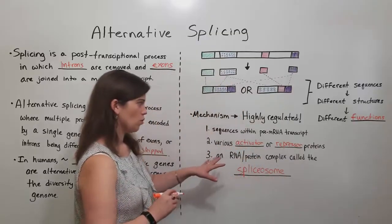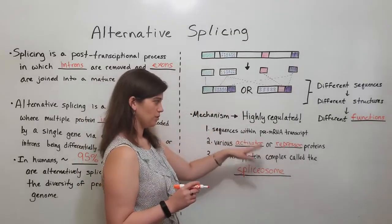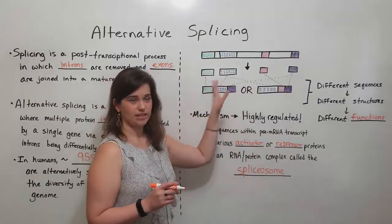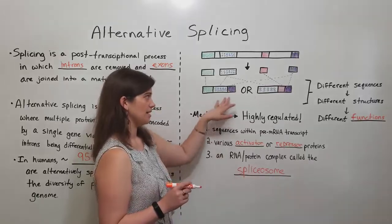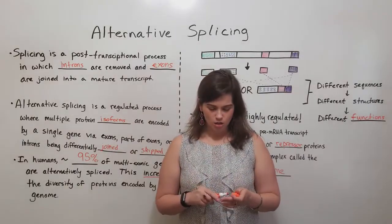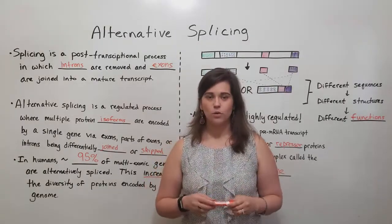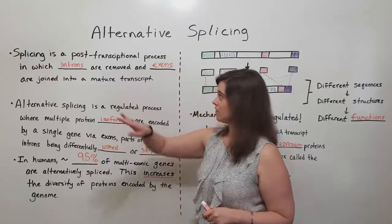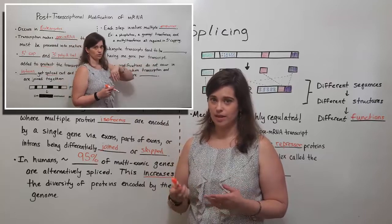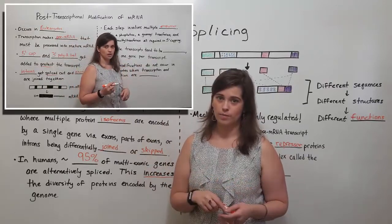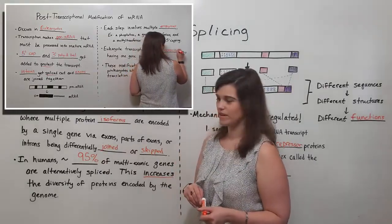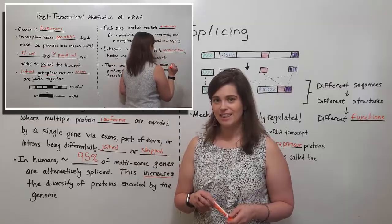The spliceosome works together with the activator proteins, which activate it, and repressor proteins, which repress it, to cut and join in the right places to produce these different transcripts that eventually lead to the different protein isoforms. That is it for this video on alternative splicing. If you're interested in learning about post-transcriptional modifications like regular splicing, 5-prime capping, and the 3-prime poly-A tail, please see my video on the post-transcriptional modification of mRNA. Thank you for watching.